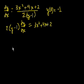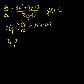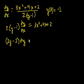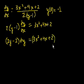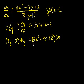Multiplying both sides by dx — this is really just an exercise in algebra — you get: (2y minus 2) dy equals (3x squared plus 4x plus 2) dx. I have separated the independent from the dependent variable and their relative differentials, so now I can integrate.